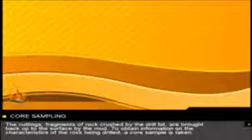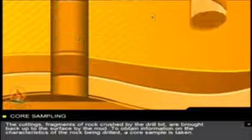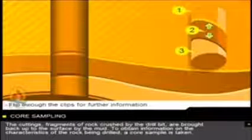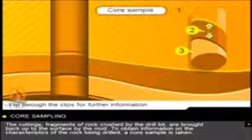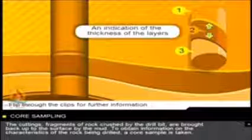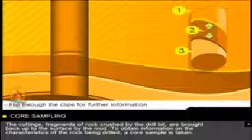The log engineer is responsible for the analysis of the results of the various logs. The sides of the well are then reinforced by steel tubes. These tubes, called casings, are cemented into the ground. They isolate the various layers encountered.